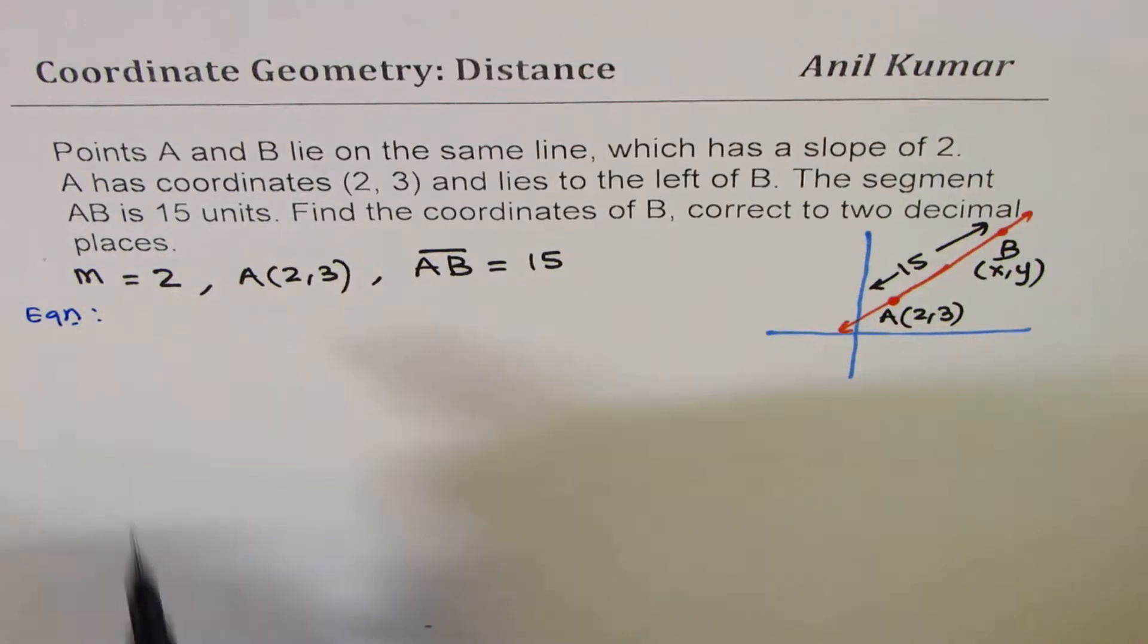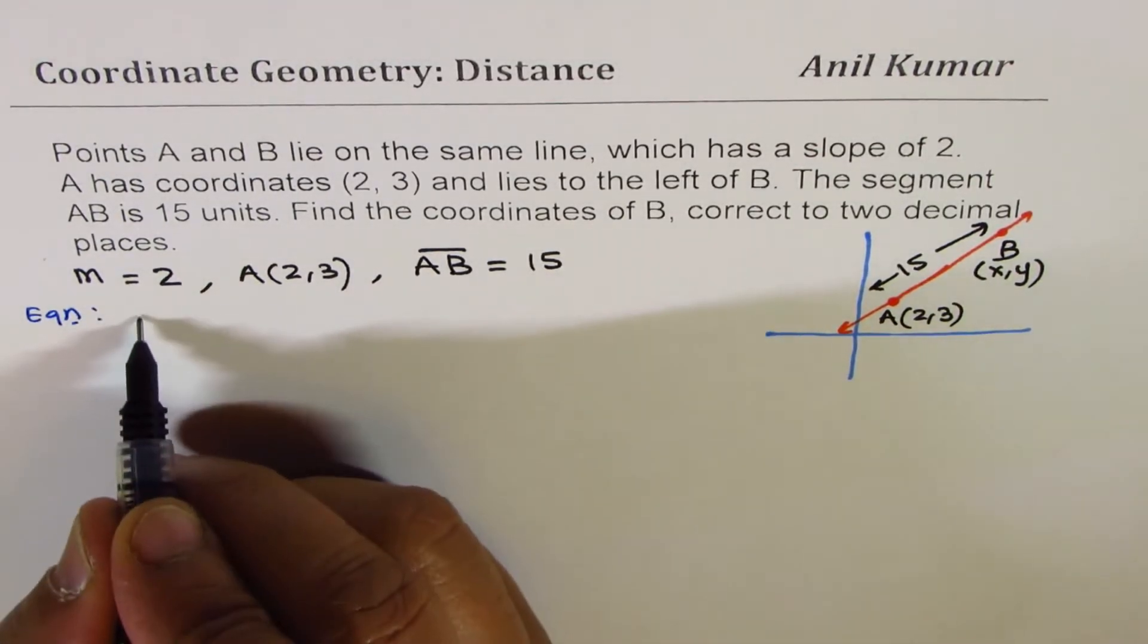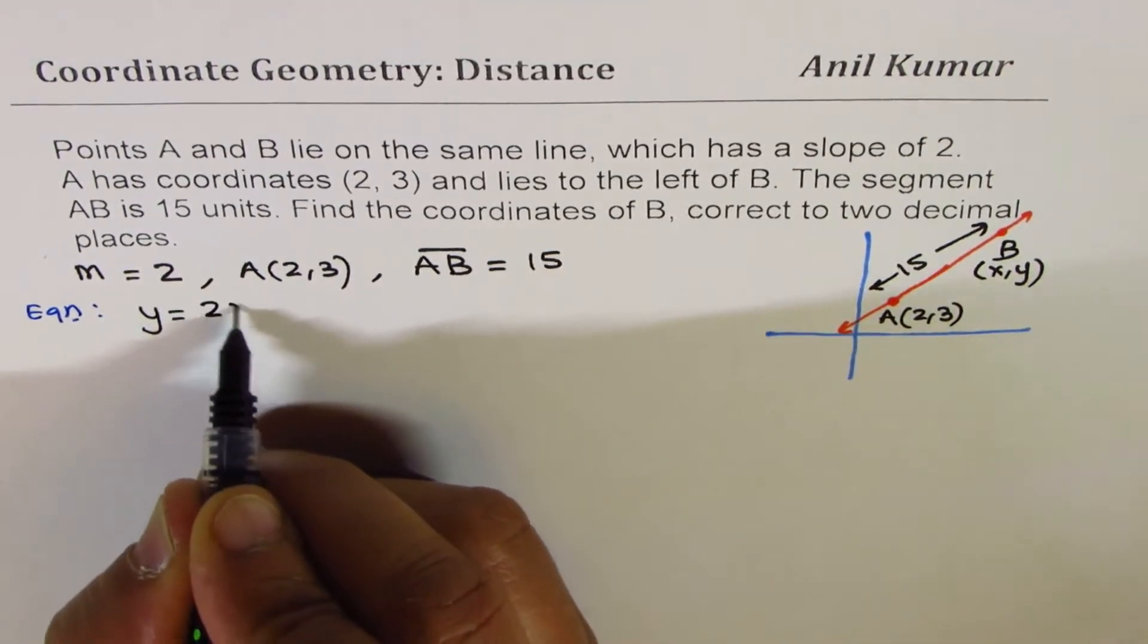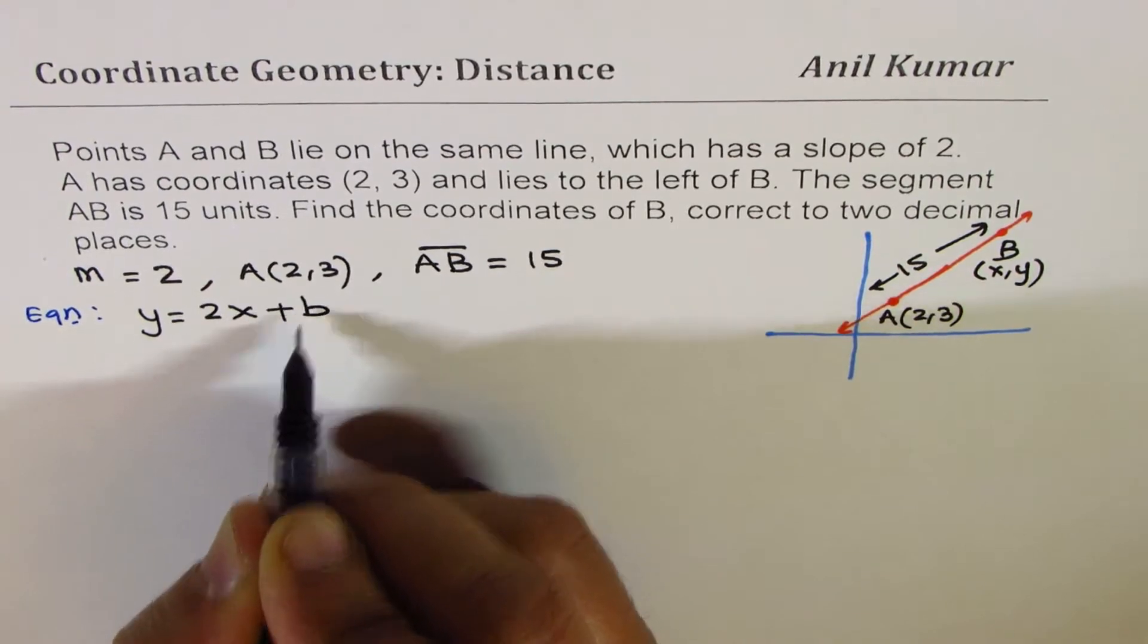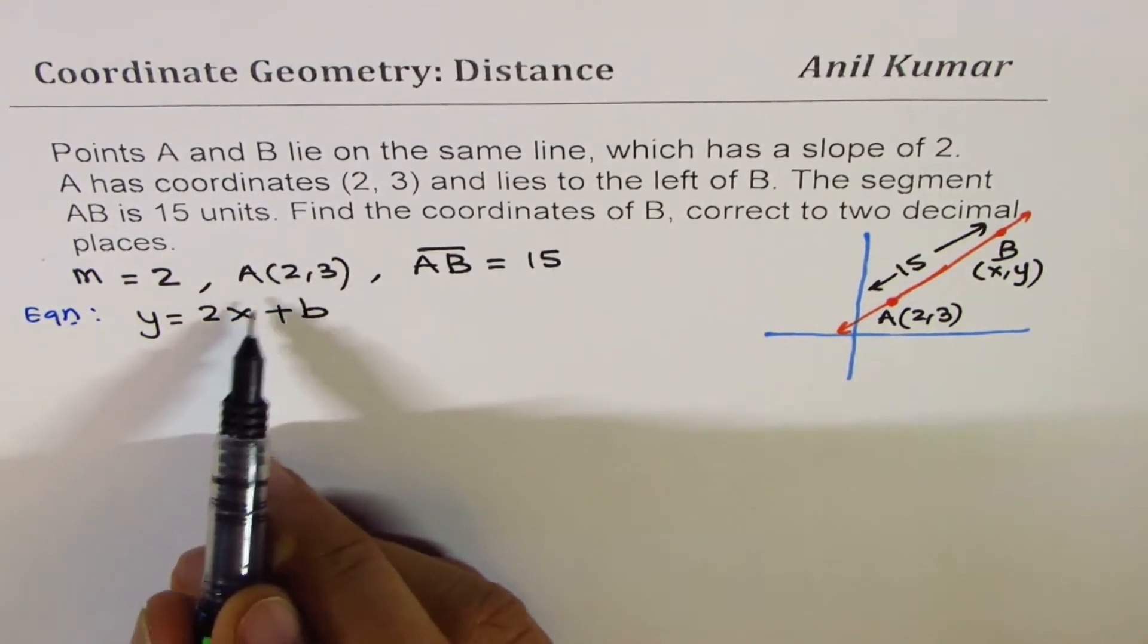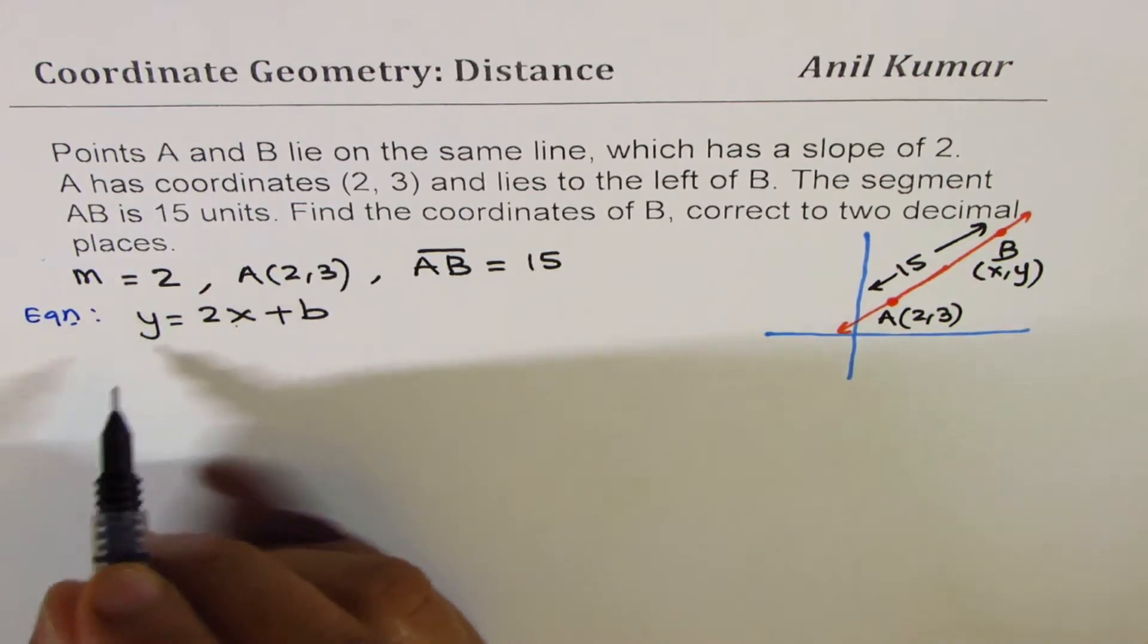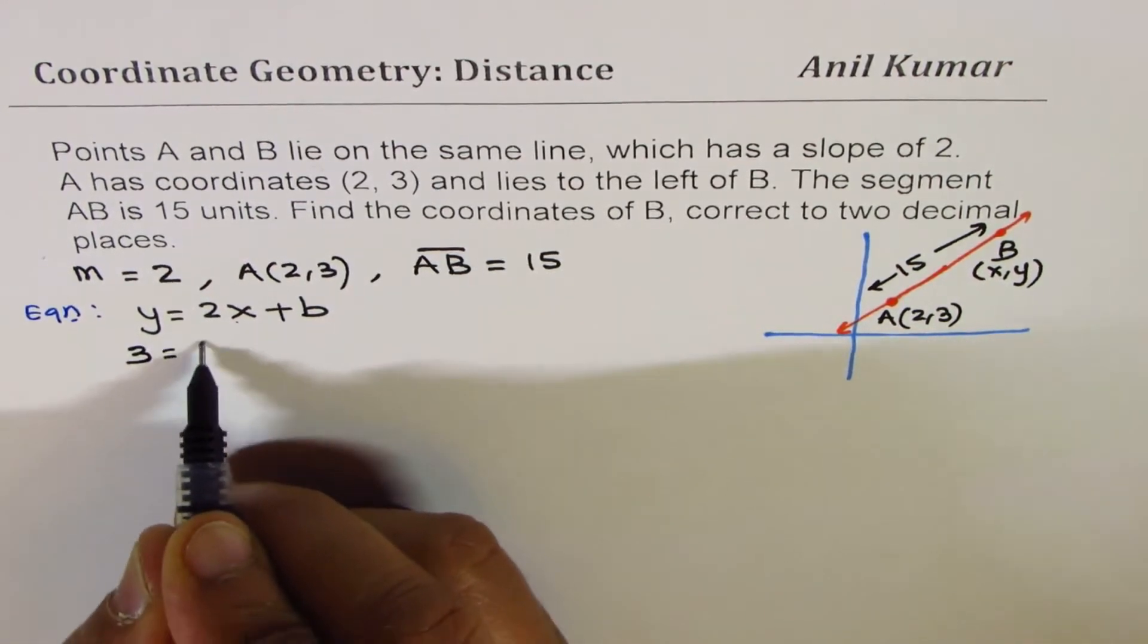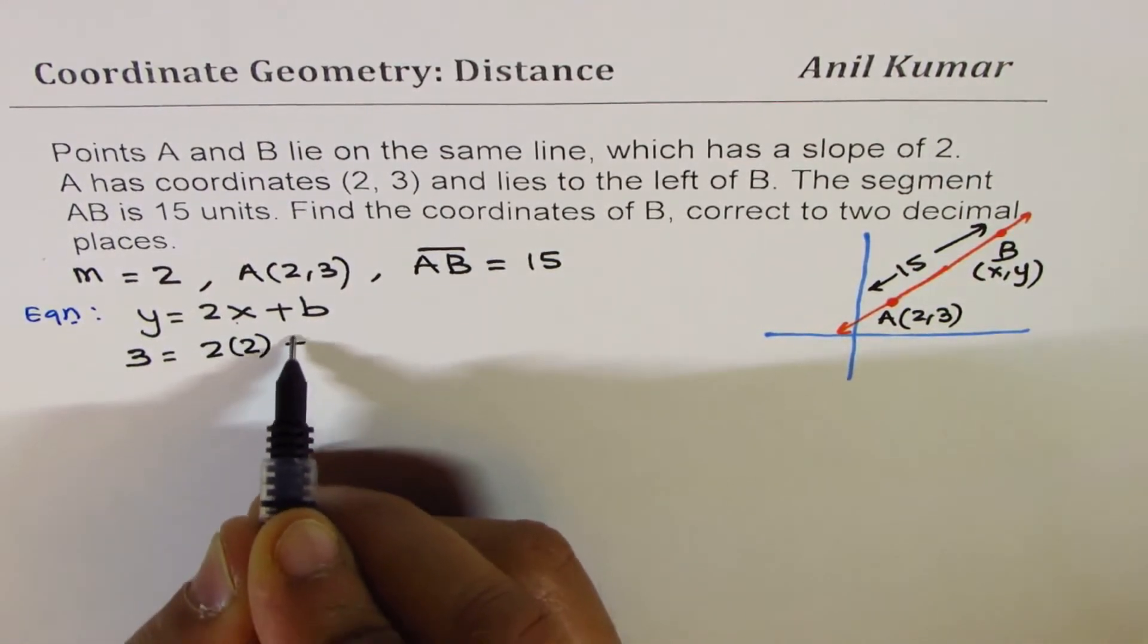Now, in this case, since we are given slope of 2, we can write y = 2x + b. Now, since A is on the line, we can substitute 2 for x, 3 for y. So, we get 3 = 2(2) + b.